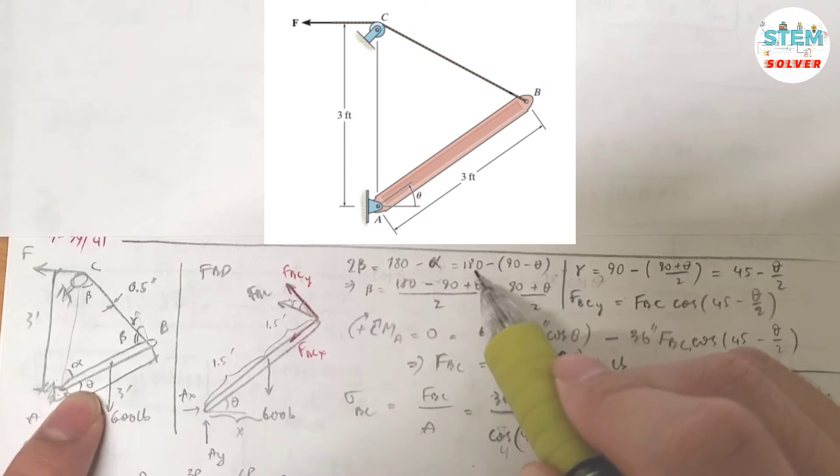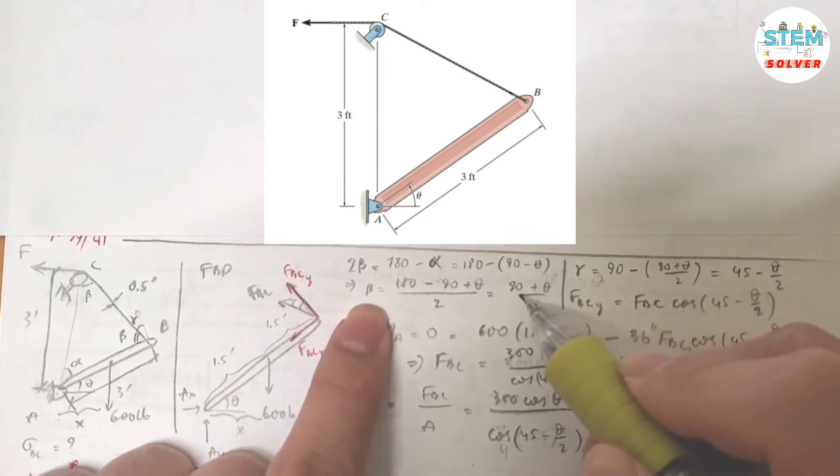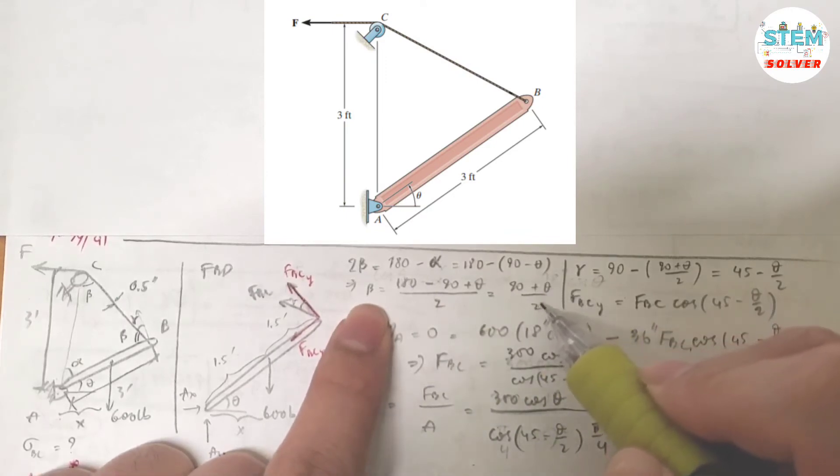So I have 2 beta equals 180 minus 90 minus theta. Simplify this out. I get beta equals 90 plus theta divided by 2. Just follow me.